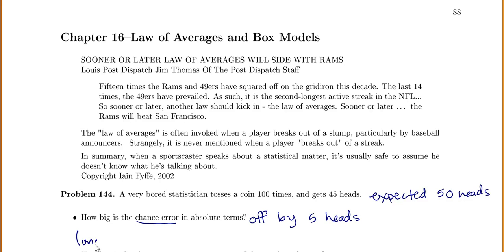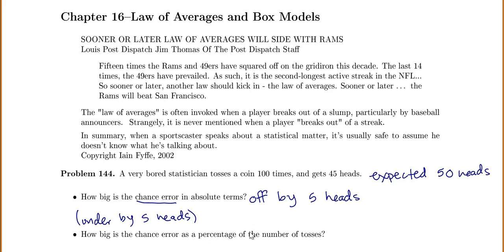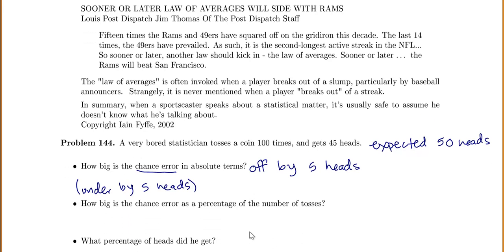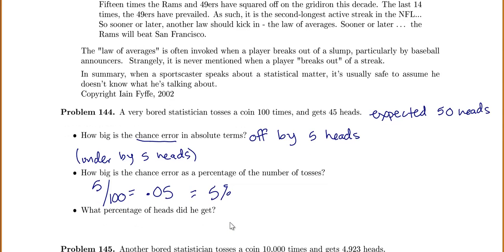Specifically we were under by 5 heads — we were under what we expected. In absolute value, we're off by 5 heads. How big is the chance error as a percentage of the number of tosses? We were off by 5 and we tossed it 100 times, so 5 out of 100 is 0.05, which is 5%. Our chance error was 5%. And what percentage of heads did he get? He got 45 heads out of 100, which is 45%.